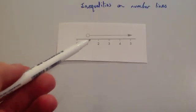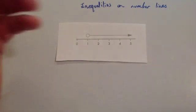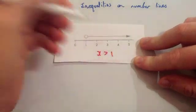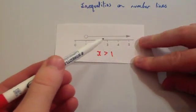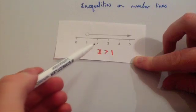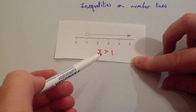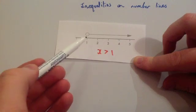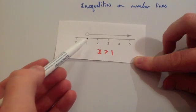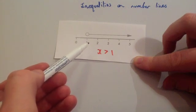Here you've got a hollow circle and an arrow pointing to the right. This would be the inequality x is bigger than 1. The arrow pointing to all the numbers bigger than 1 is straightforward, so that would be bigger than. If it's a hollow circle, it's just bigger than. If it's shaded in, it would be bigger than or equal to 1. The number that the circle is at is the number it's going to be bigger than, or bigger than or equal to.